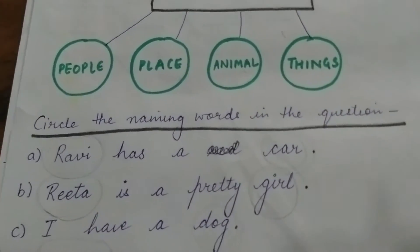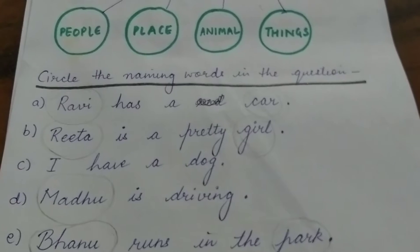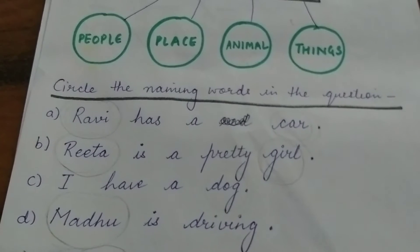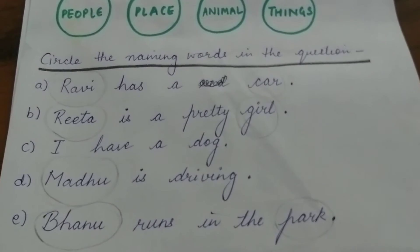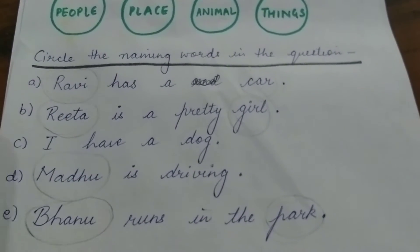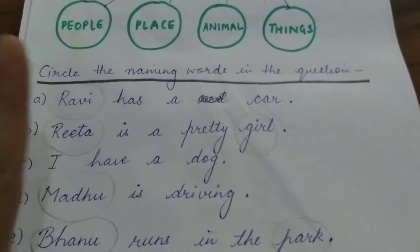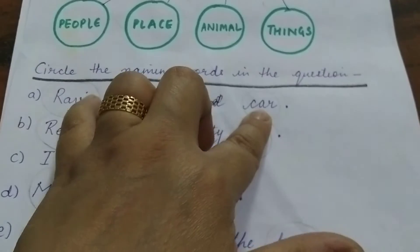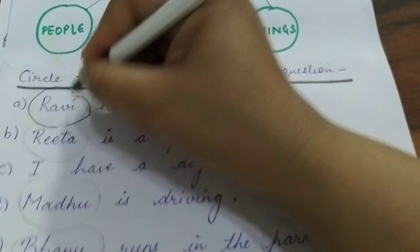There is a question in which we will circle the naming words. So there are few sentences and you have to circle the naming words here. So 'Ravi has a car.' Ravi is the name of a person; car is a thing. So we will circle Ravi and car.